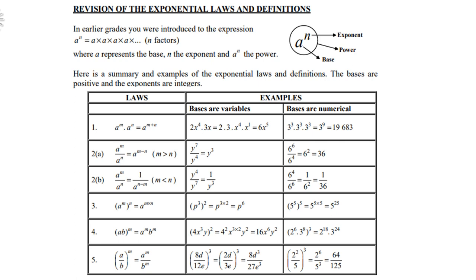Law number 4: a times b to the power m equals a to the power m times b to the power m — you distribute the m to both a and b. For example, 4x cubed y all squared: remember, it is 4 to the power 2, not 2 times 4. Then 2 times 3 for x and 2 times 1 for y, giving 16x to the power 6, y to the power 2.